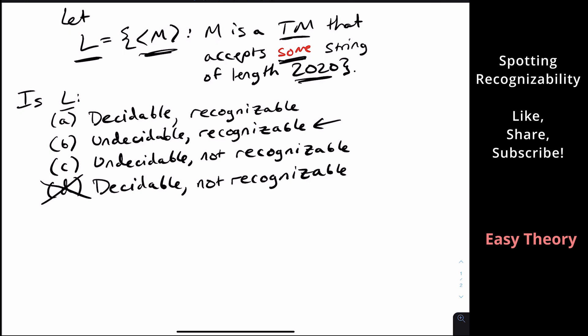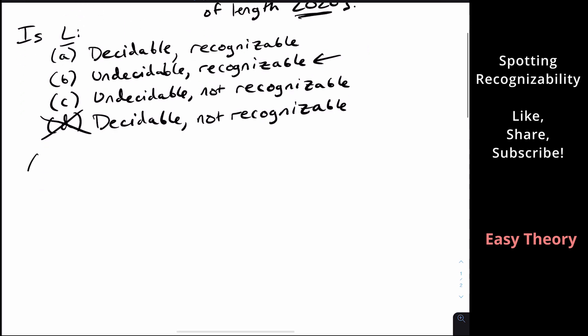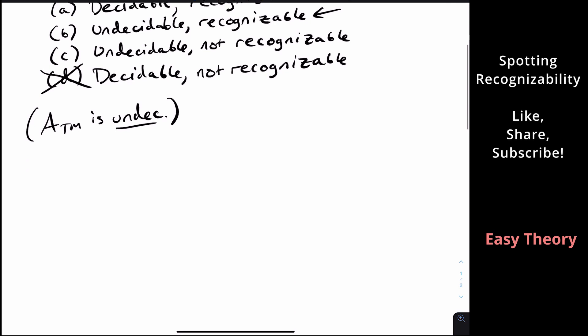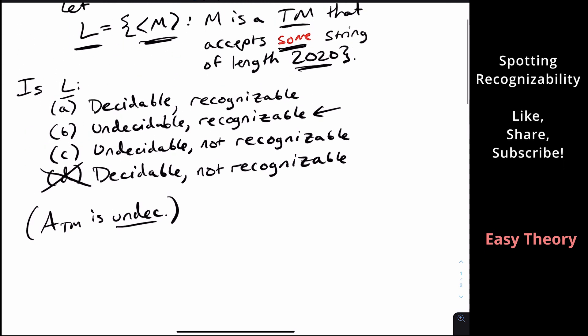So why is it not A? So it's not A because L is undecidable, because it's related to the problem for ATM, which we know is undecidable. So we know that ATM is undecidable. So how can we actually show that this is undecidable?